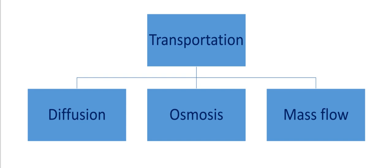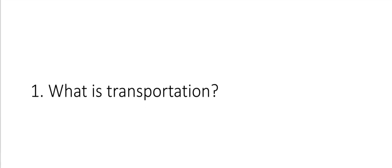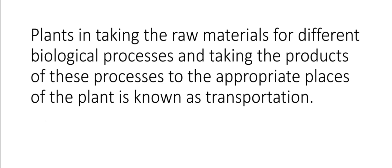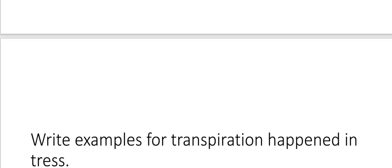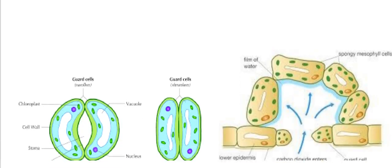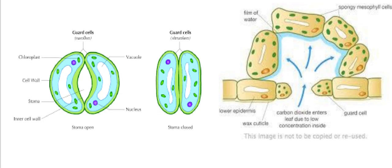Under transportation, we have to talk about three topics: diffusion, osmosis, and mass flow. Transportation in plants is the process of taking raw materials for different biological processes and taking the products of these processes to the appropriate places of the plant. Let's see some examples of transportation that happen in trees.